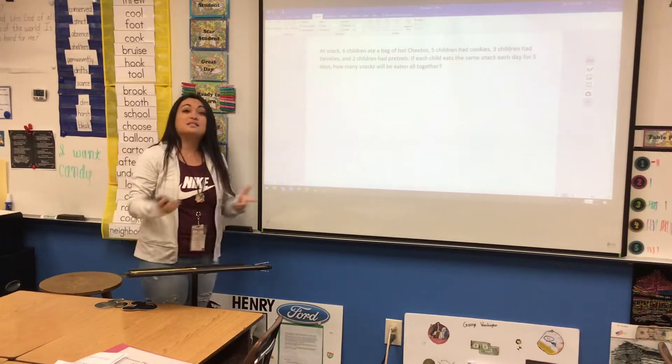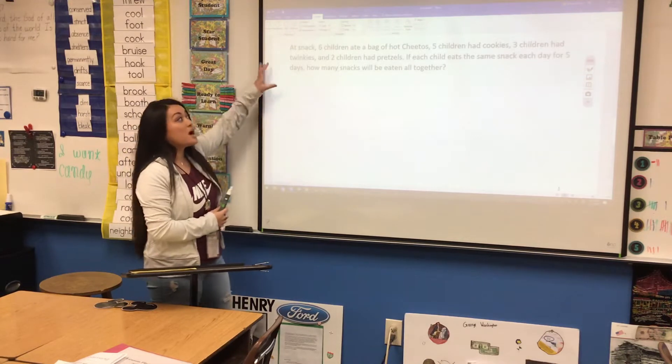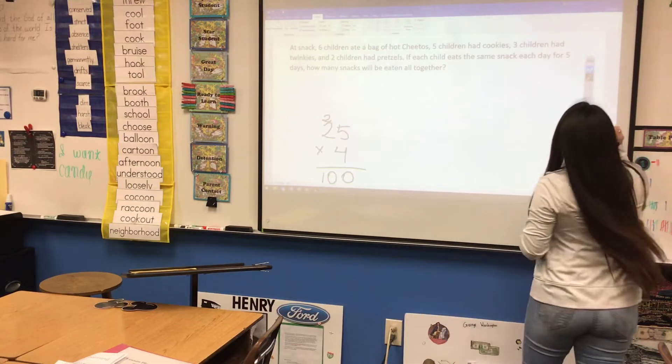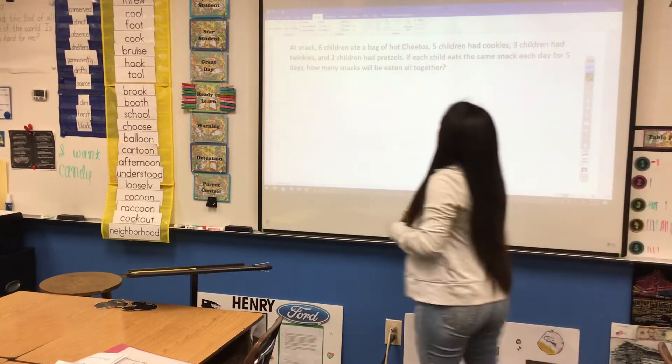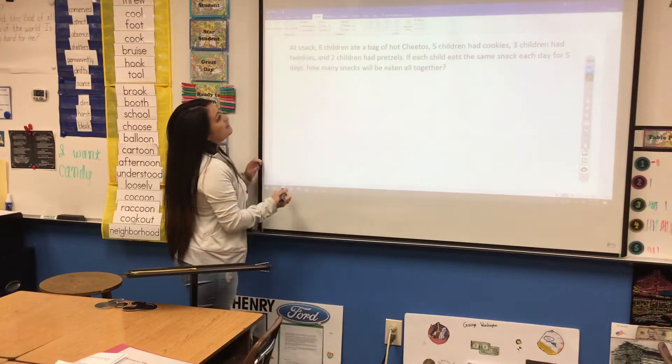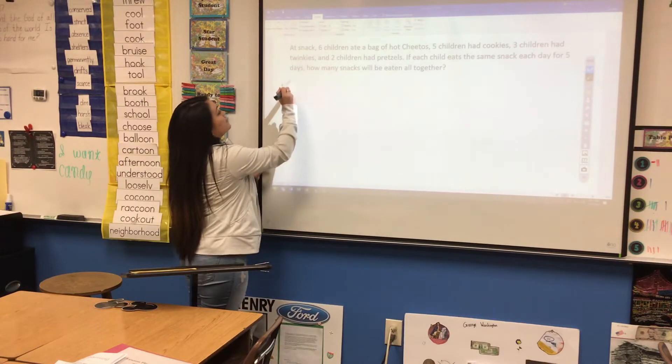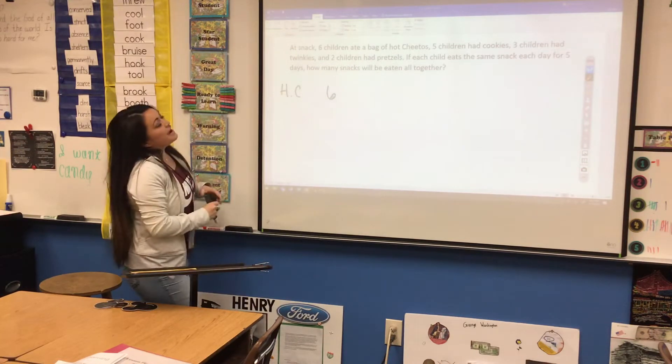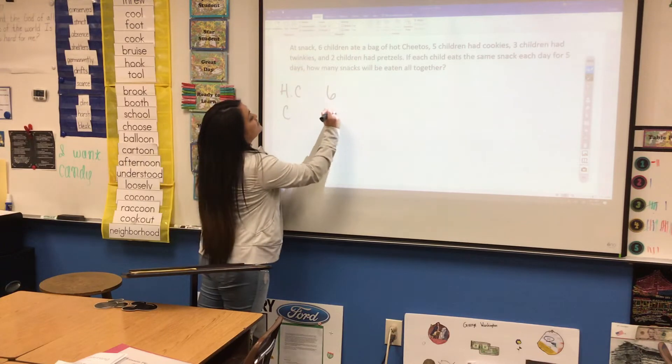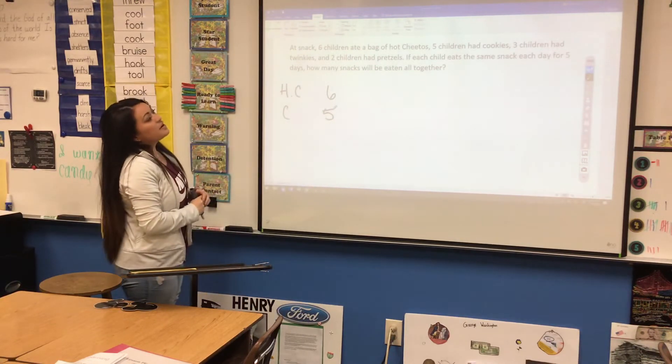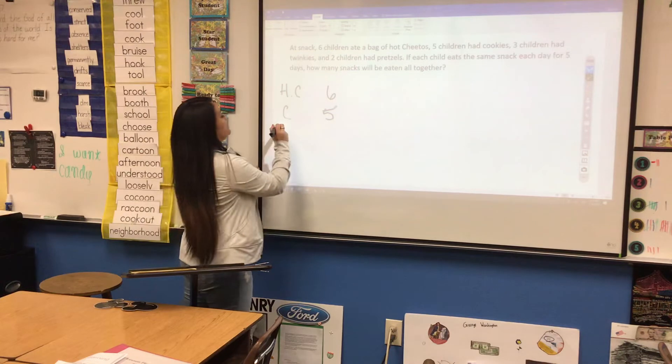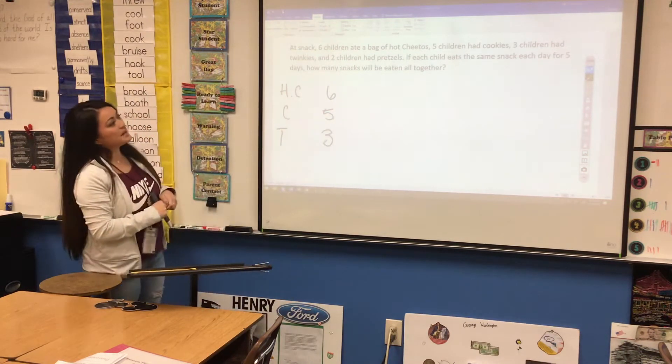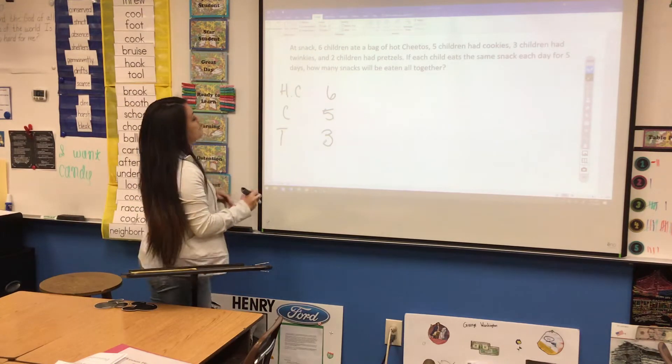Now this kind of has to do with the lesson that we talked about yesterday. We're given a lot of information, but we just take that information and condense it down a little. So it says, at snack, we have six children ate bags of hot Cheetos. We're just going to put H, C, and then we had 6. Five children had cookies. We'll put C for cookies and a 5 right here. Three children had Twinkies. A T for Twinkies and a 3, because that's how many kids had them. And two had pretzels.